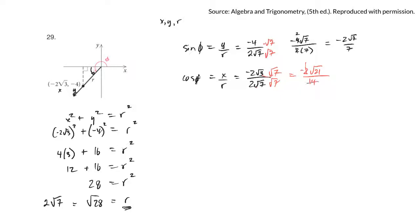2 will go into here, and 2 will go into there 7 times. So it would be negative root 21 over 7. I'd like to divide the 7 into the 21, but I can't, because one's in a square root and one's not. So I can't divide those, so I'd leave that there.